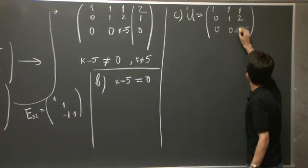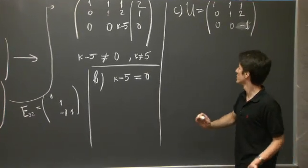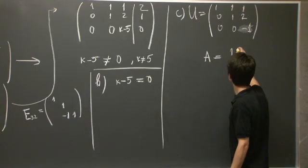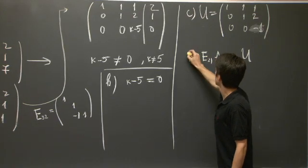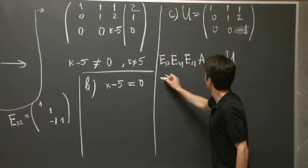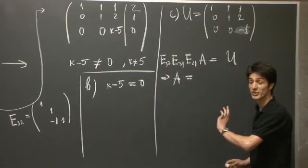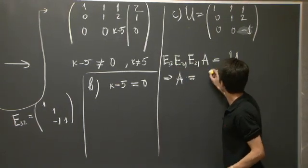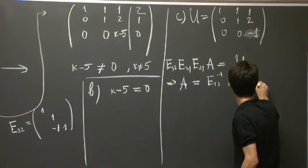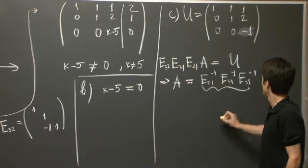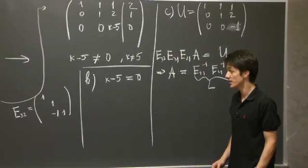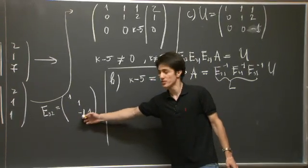And now what about the matrix L? Well, how did we get to this U? We had the matrix A. We got the matrix U. And what we did was first we applied E21. Then we applied E31, and then E32. So we get A by inverting this equation. So it's going to be E21 inverse, E31 inverse, E32 inverse times U. And this is our matrix L. And we know it's fairly easy to invert these elementary matrices E. We just flip the signs of the off-diagonal entries.